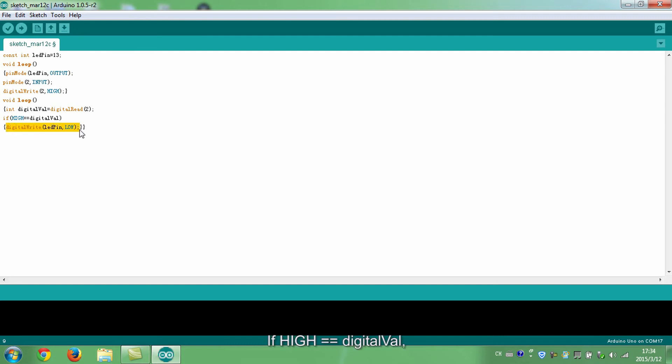If high equals to digital valve, it indicates that the tilt switch lays flat and the LED will go out. Now, turn the LED on.